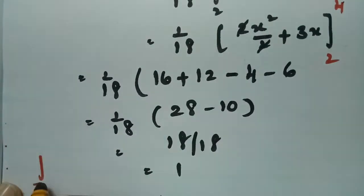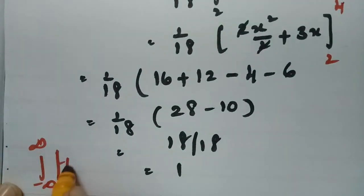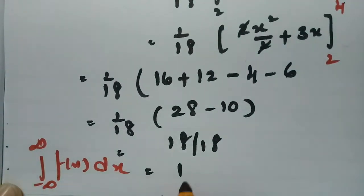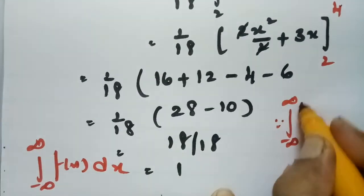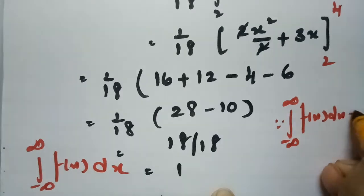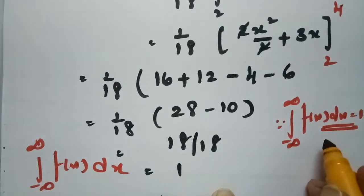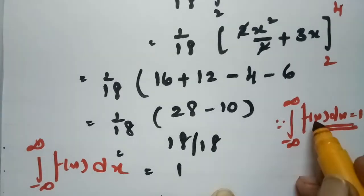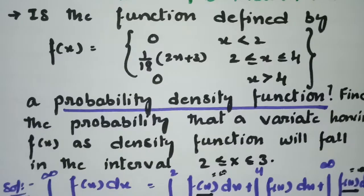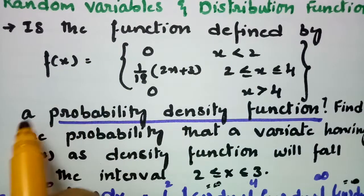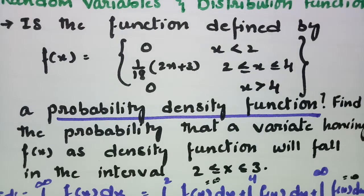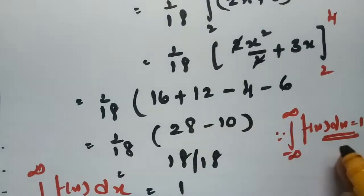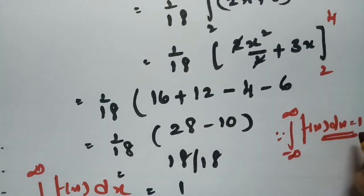Since the integral from minus infinity to plus infinity of f(x) dx equals 1, we conclude that f(x) is a probability density function. The given function is confirmed to be a probability density function, as the total integral value equals 1.